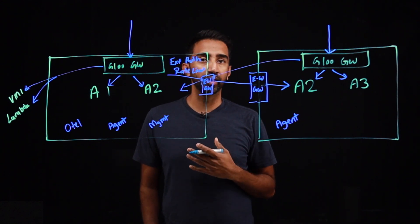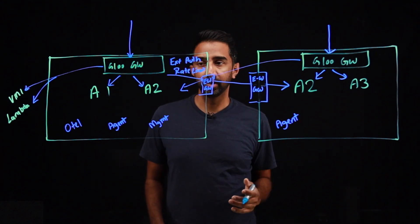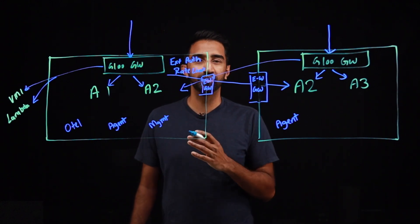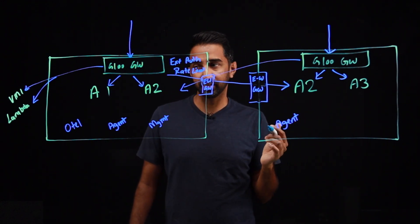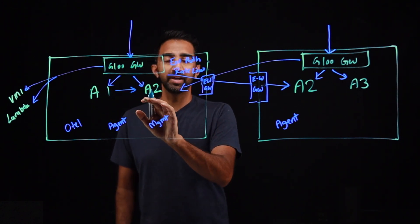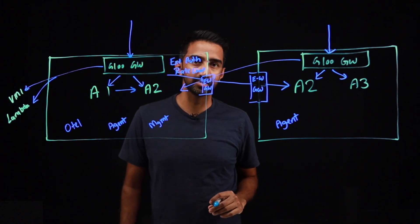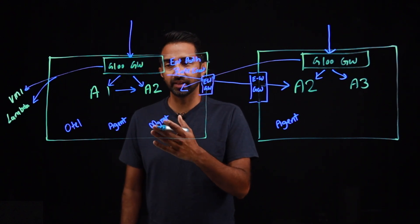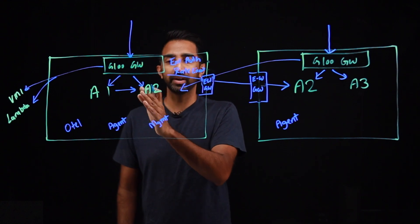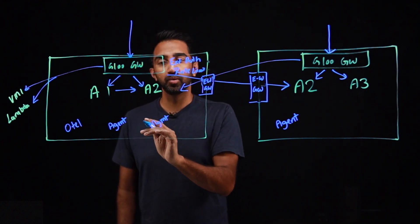This might be a good point to introduce mesh. With a service mesh, you have specific granular control over exactly what service can talk to what other service. So when A1 wants to talk to A2, we can make sure that this traffic is fully encrypted with MTLS. We can create the right authorization policies to make sure A1 can talk to A2.